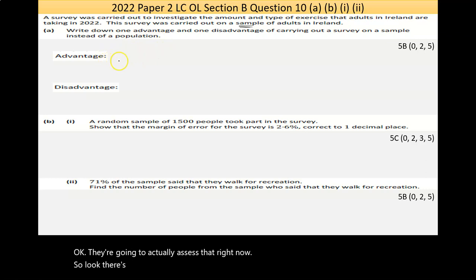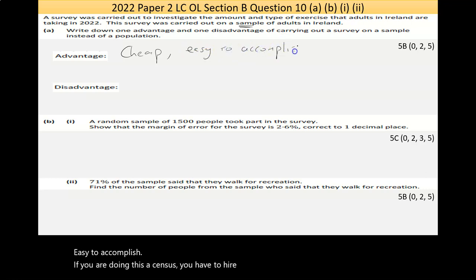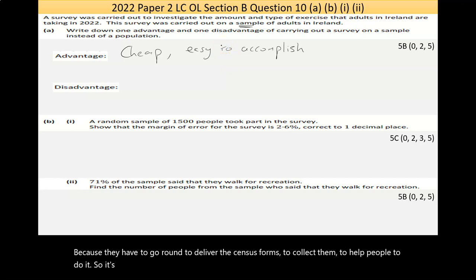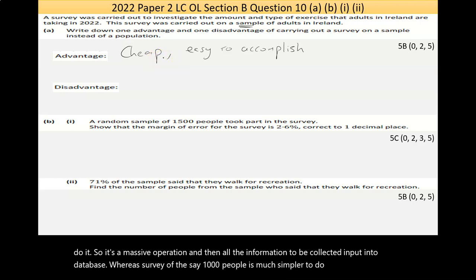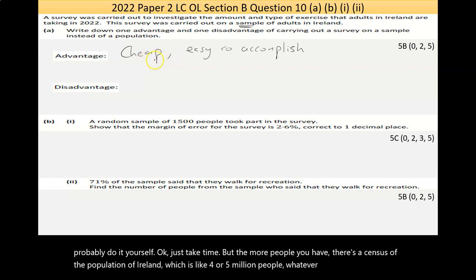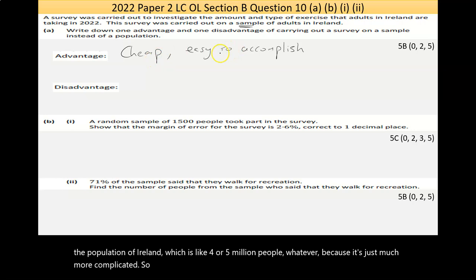There's loads of advantages. A survey, advantage of it is that it's cheap, easy to accomplish. If you are doing a census, you have to hire, it's not just like five or six people. Because they have to go around to deliver the census forms, to collect them, to help people do it. So it's a massive operation, and then all the information has to be collected, inputted to a database. Whereas a survey of, let's say, a thousand people is much simpler to do.